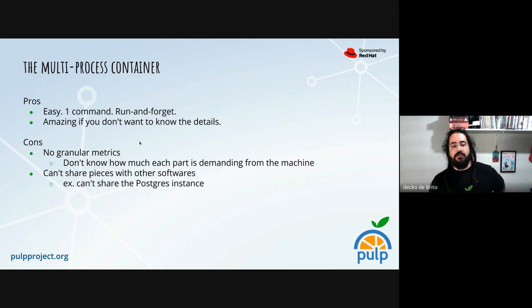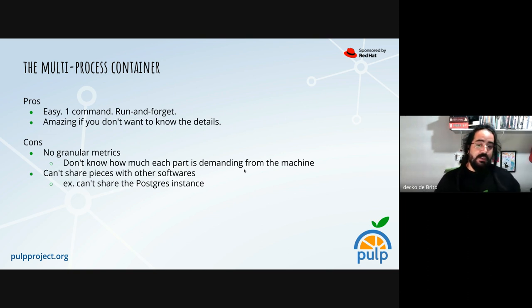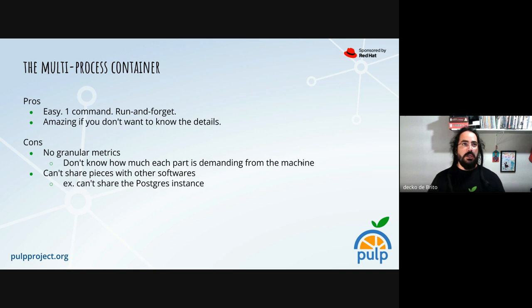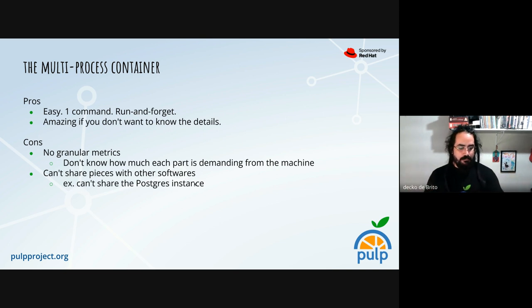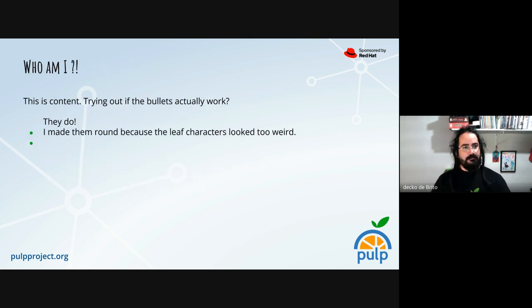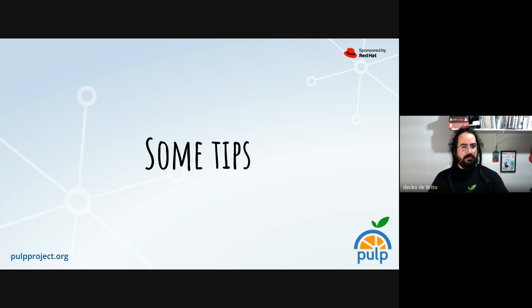Some cons: we don't have granular metrics — we don't know how much each part is demanding from the machine. If you are serving content, we don't know how much nginx or the Pulp content is demanding from the current machine. Also, you can't share pieces with other software — for example, you can't share your Postgres instance with other applications that could use it.